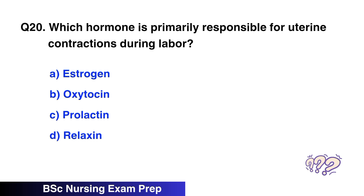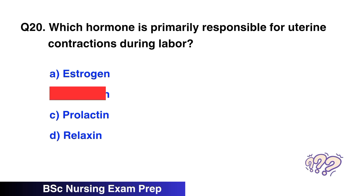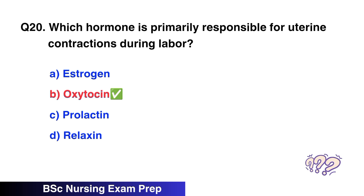Question 20. Which hormone is primarily responsible for uterine contraction during labor? The correct option is B, oxytocin.